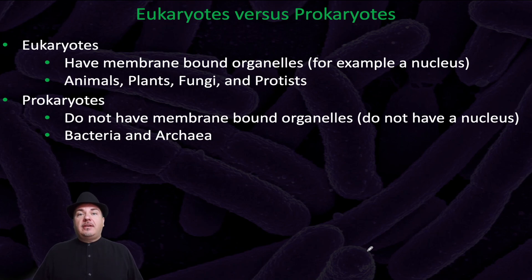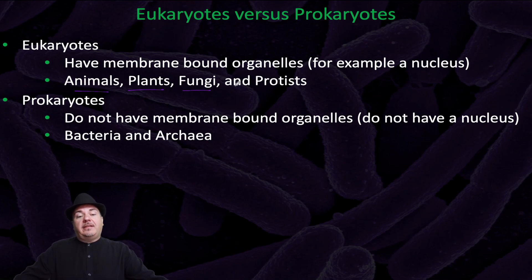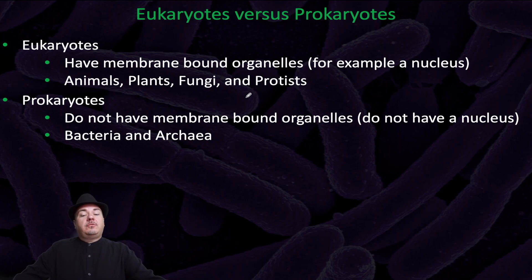We've had a brief introduction to the acellular microorganisms — prions and viruses — and to the eukaryotic microorganisms. Now let's define some differences between eukaryotes and prokaryotes. Eukaryotes have membrane-bound organelles, for example a nucleus. Examples of eukaryotes include animals, plants, fungi like mushrooms, and protists. Prokaryotes do not have membrane-bound organelles, so they don't have a nucleus. The prokaryotes are the bacteria, which we'll talk a lot about in this course, and the archaea, which we'll only briefly mention.